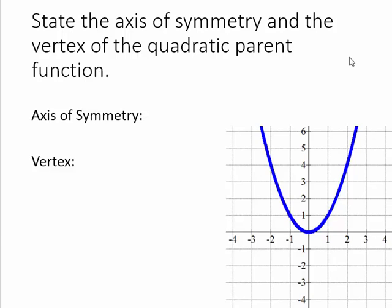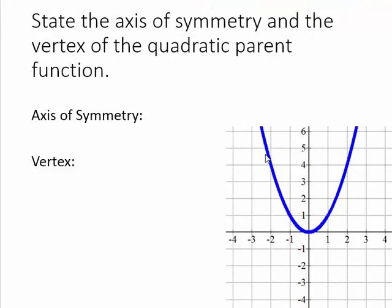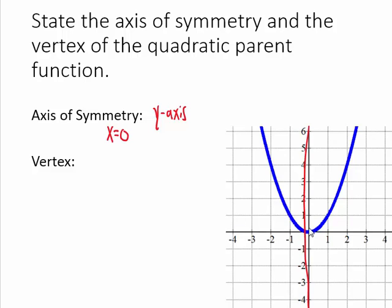So go ahead and state the axis of symmetry and the vertex of the quadratic parent function. Pause the video, work it out, and press play when you're ready to see the answer. The axis of symmetry is the line that splits the quadratic straight down the middle — it should be straight on top of the y axis. That line is x is equal to zero. You could also say the axis of symmetry is the y axis. The vertex is at the origin, at the point zero, zero.